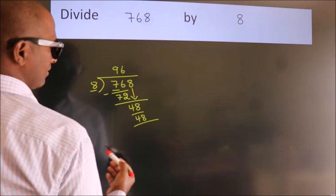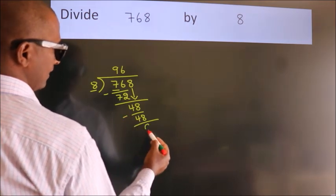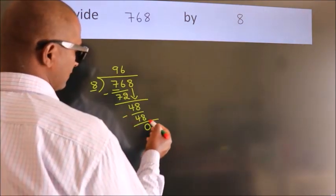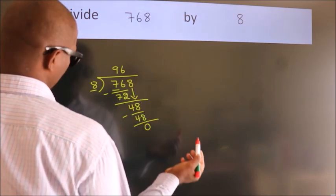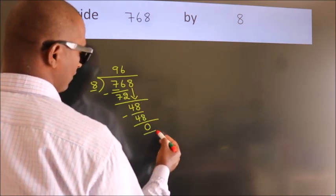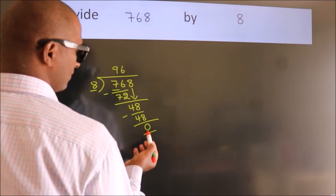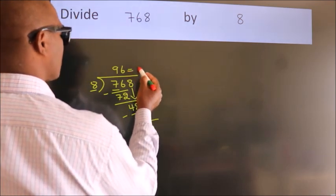Now we subtract. We get 0. After this, no more numbers to bring it down. And we got remainder 0. So this is our quotient.